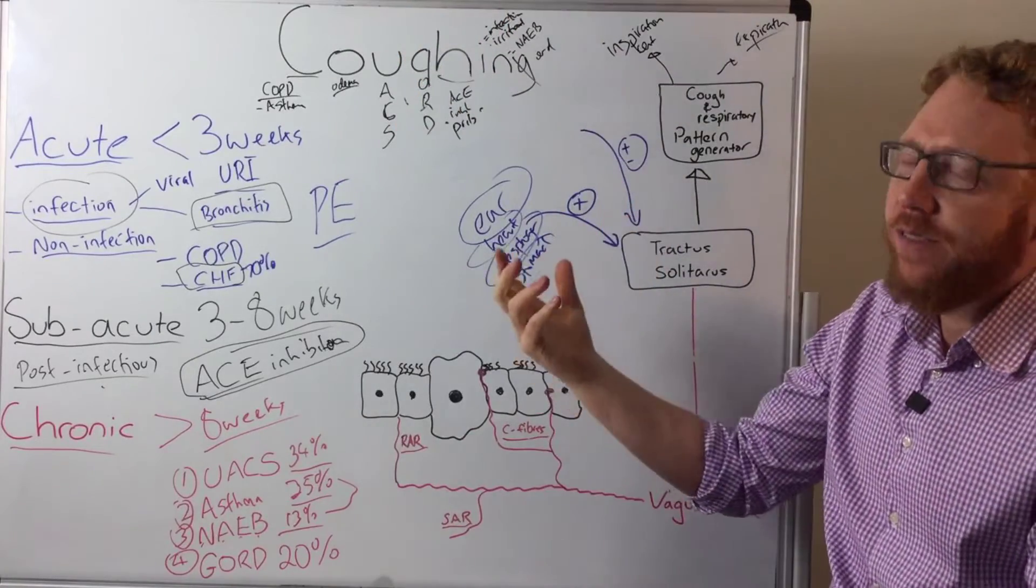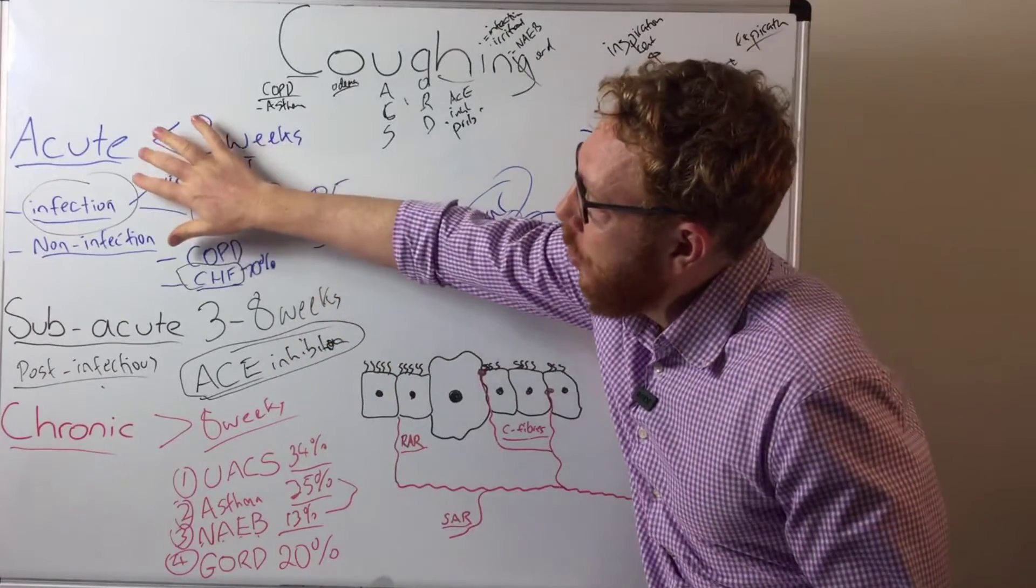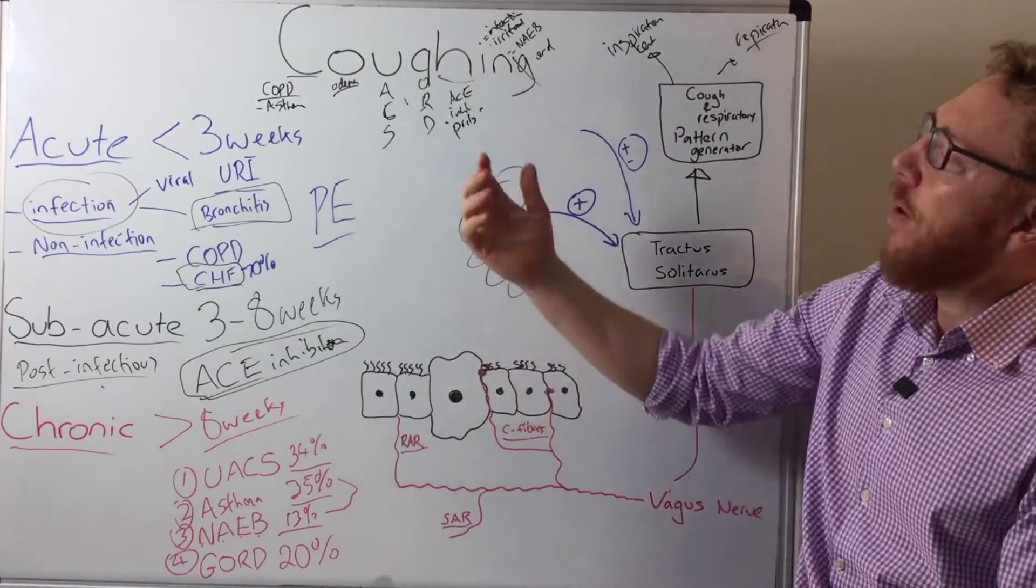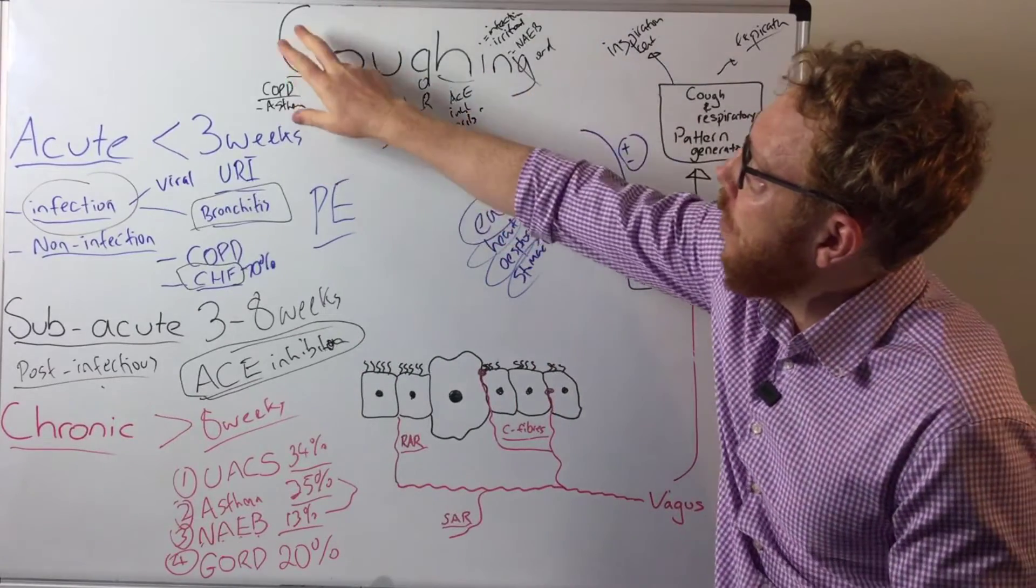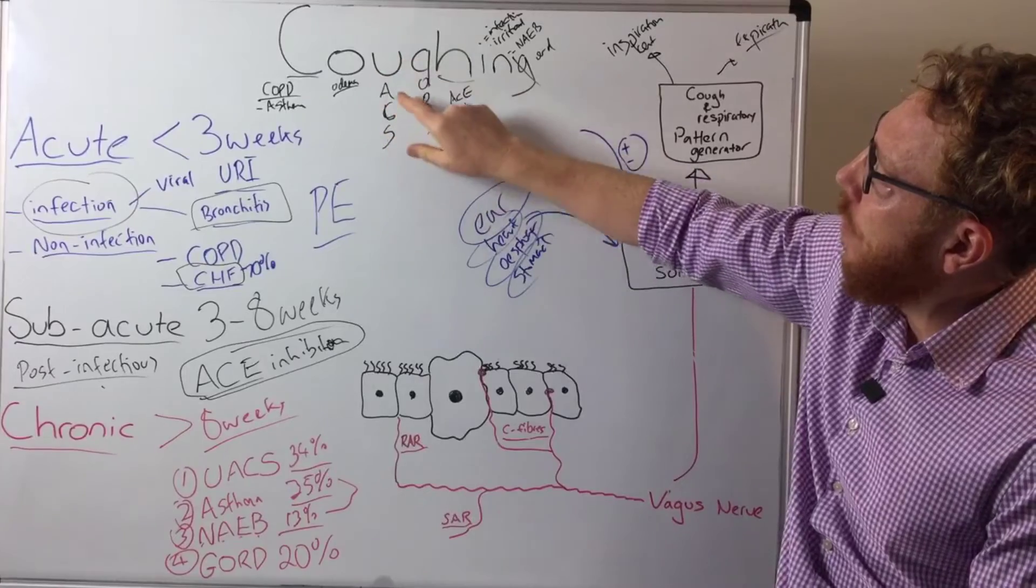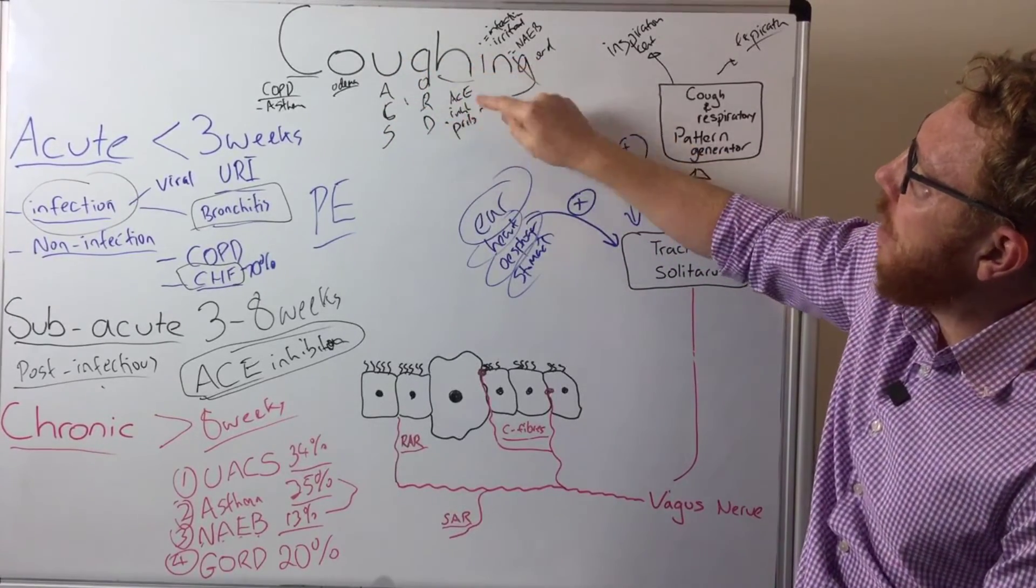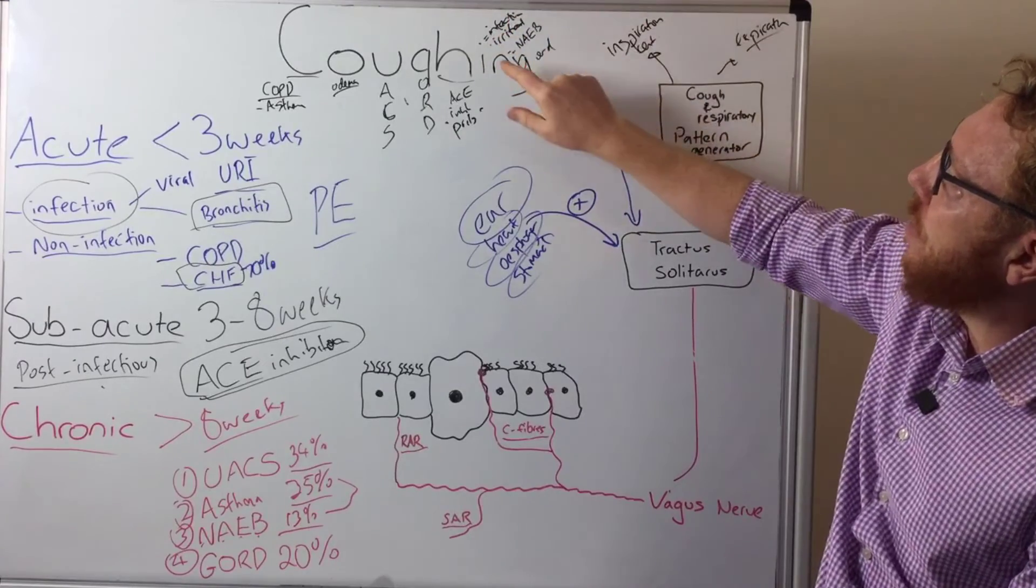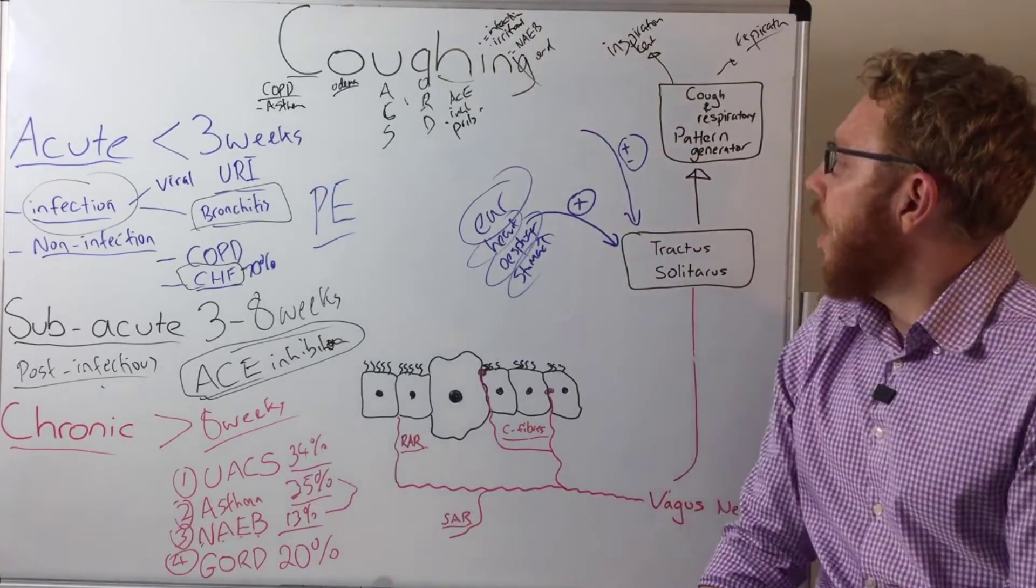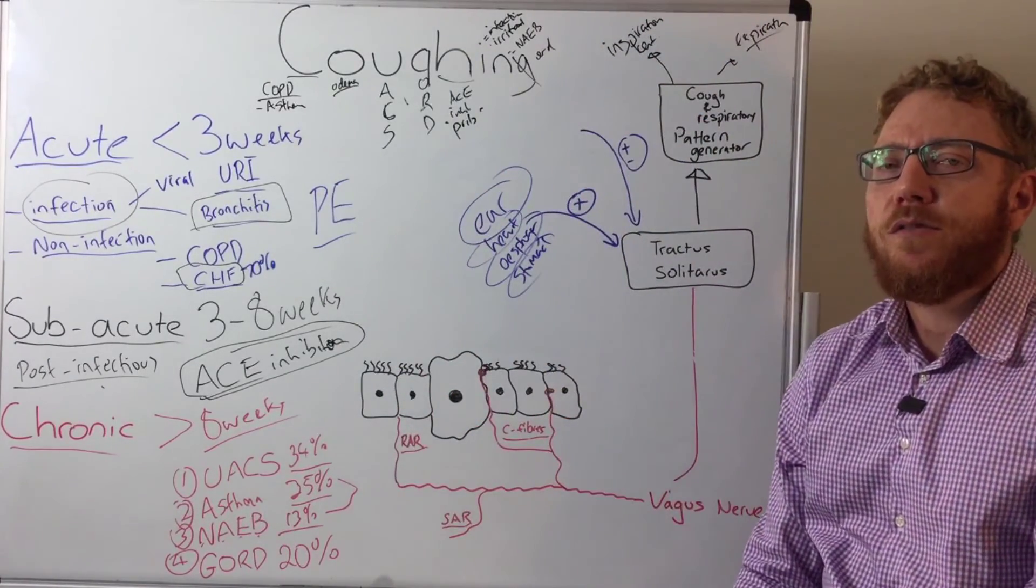So hopefully now you've seen we now know a definition of a cough, we know it's a reflex, we know why we need it, we know the categories in duration: acute, subacute, chronic. We know an easier mnemonic being coughing. And then we've seen the mechanism behind it, so this is what leads to a cough.